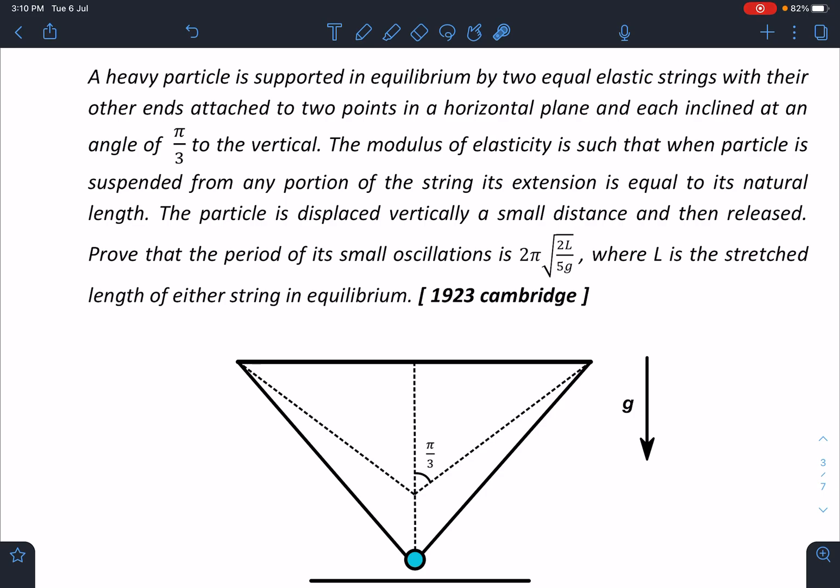A heavy particle is supported in equilibrium by two equal elastic strings with their other ends attached to two points in a horizontal plane, and each inclined at an angle of π/3 to the vertical. The modulus of elasticity is such that when particle is suspended from any portion of the string, its extension is equal to its natural length. The particle is displaced vertically by a small distance and then released. Prove that the period of its small oscillation is 2π√(2L/5g), where L is the stretched length of either string in equilibrium.